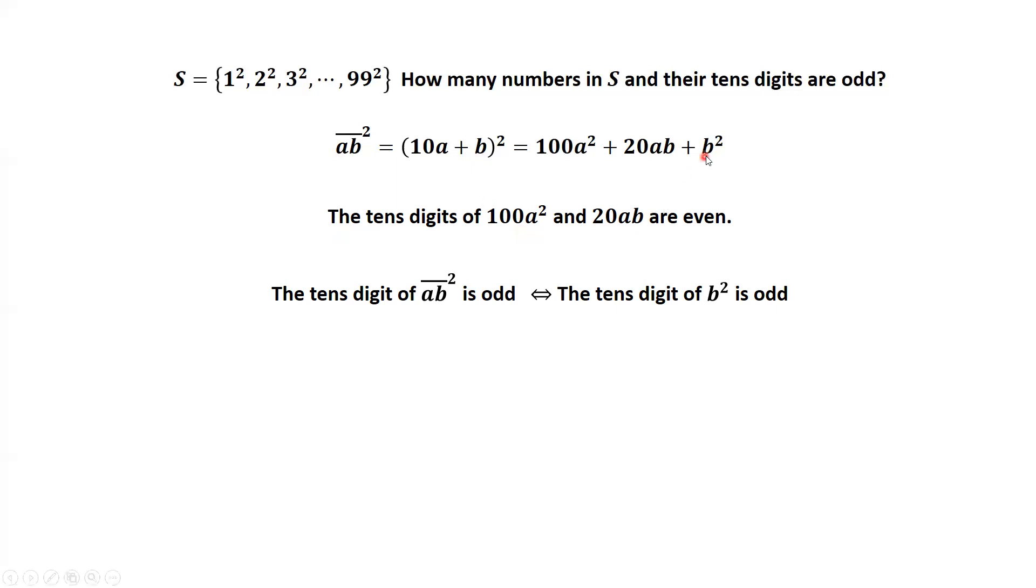This means if B square, its tenth digit is odd, implies the tenth digit of AB square is odd. B is the one's digit. B can be zero, can be one, can be nine. Check all those B squares. This is odd, and this both have the tenth digit which is odd.